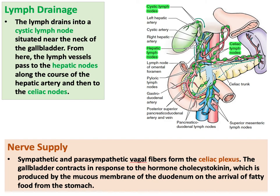Lymphatic drainage of the gallbladder mainly follows the blood vessels. A cystic lymph node near the neck of the gallbladder drains into hepatic lymph nodes along the hepatic artery, then to the celiac lymph nodes around the celiac artery. Nerve supply comes from the celiac plexus, a mixture of sympathetic fibers from splanchnic nerves and parasympathetic fibers from the vagus nerve.